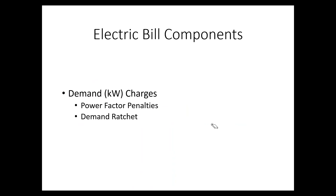Demand charges are typically composed of a couple of items. One is power factor penalties, which is a penalty for the power quality that your facility influences back to the grid — we'll cover that in another section. The other is the demand ratchet, which means if you use a lot of power at one time and then don't use energy, they still charge you. We'll cover that in another section as well.